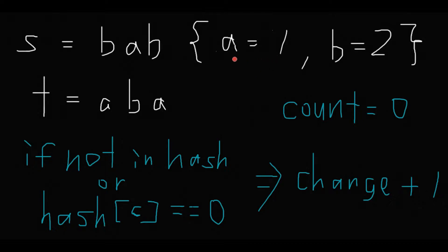If not in hash, or hash current character from t is 0, if it matches any case, then change plus 1.